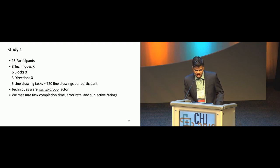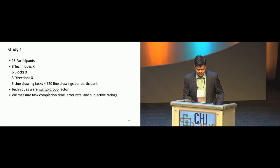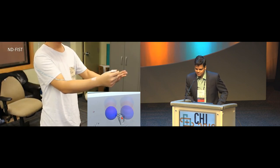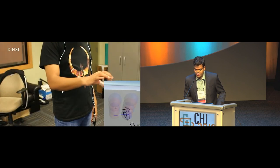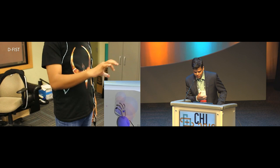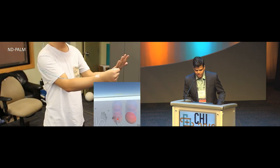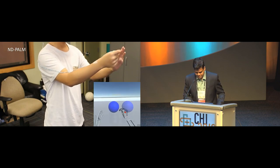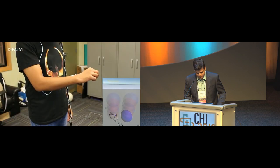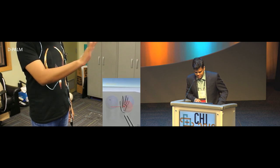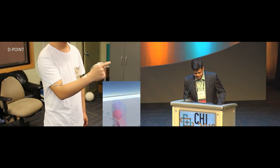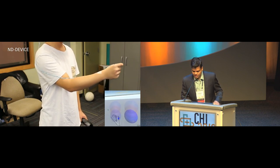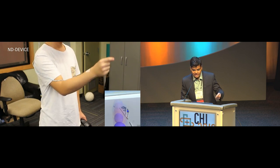We conducted a first study with eight techniques. This was a within-group study, and we measured task completion time, error rate, and subjective ratings. The first technique is non-dominant fist, where the non-dominant hand forming a fist acts as the mode switch. In dominant hand fist, the dominant hand forms a fist to switch the mode. In non-dominant palm, the orientation of the palm switches the mode. In dominant palm, the dominant palm posture switches the mode. In dominant point, a pointing posture switches the mode. In non-dominant device, the user holds a controller in the left hand to switch the mode.